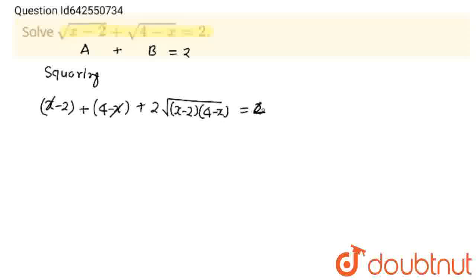So this will become 4. 2 square will become 4. 4 minus 2 will be 2 plus 2 times square root x minus 2 into 4 minus x is equal to 4. So I am going to take this 2 to that side. This will become 2 times square root x minus 2 into 4 minus x is equal to 2 and 2 and 2 will get cancelled out. This will become 1.